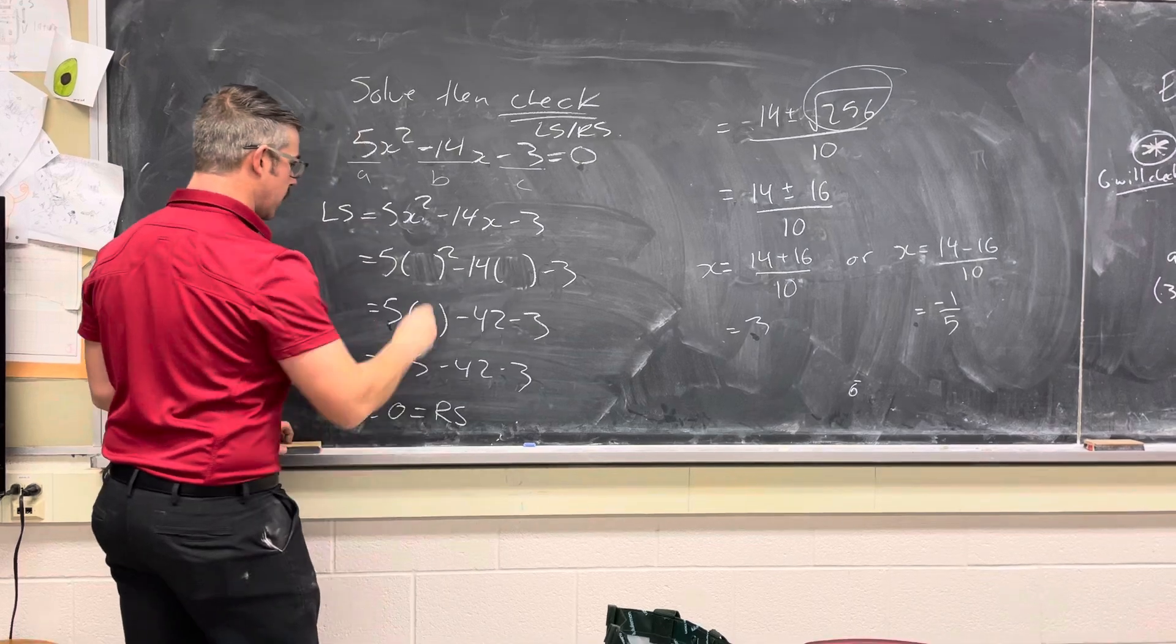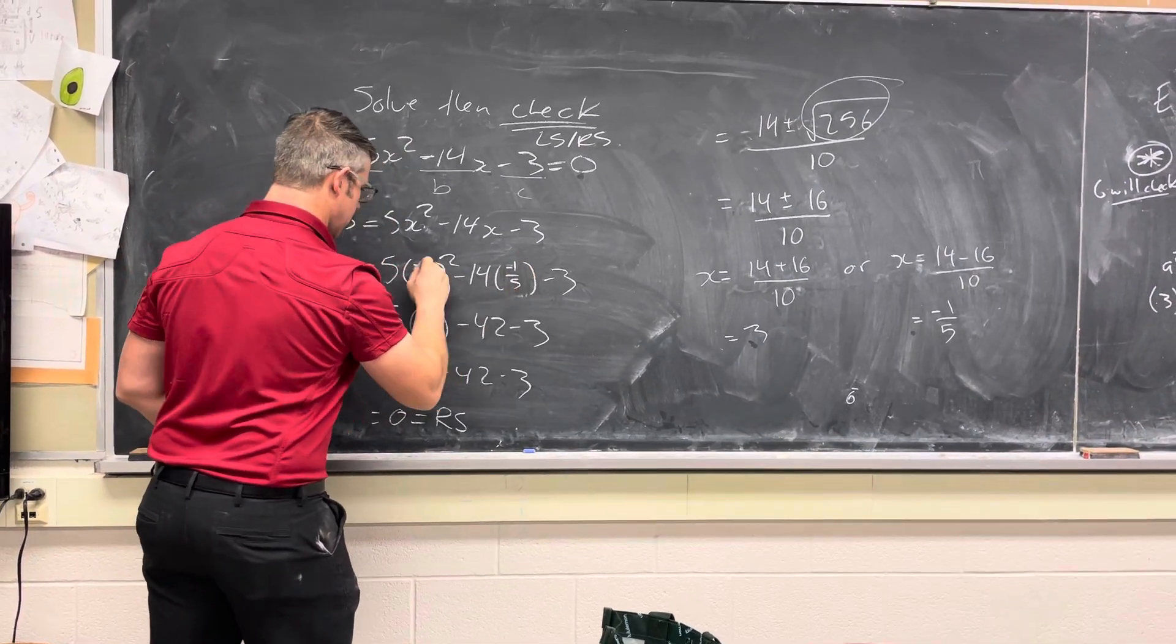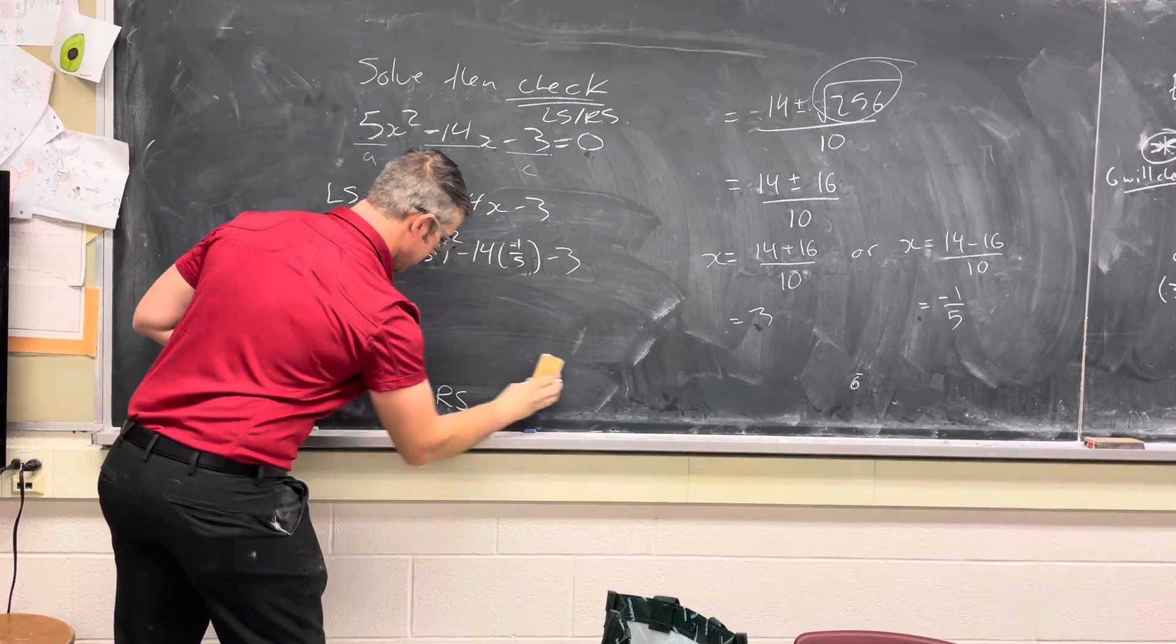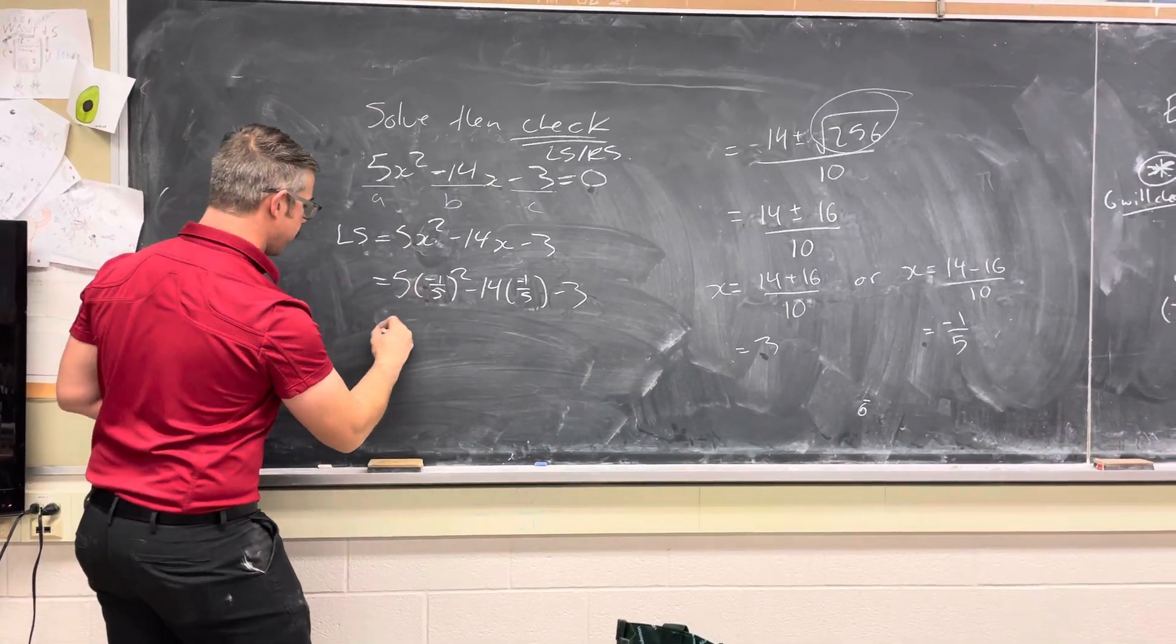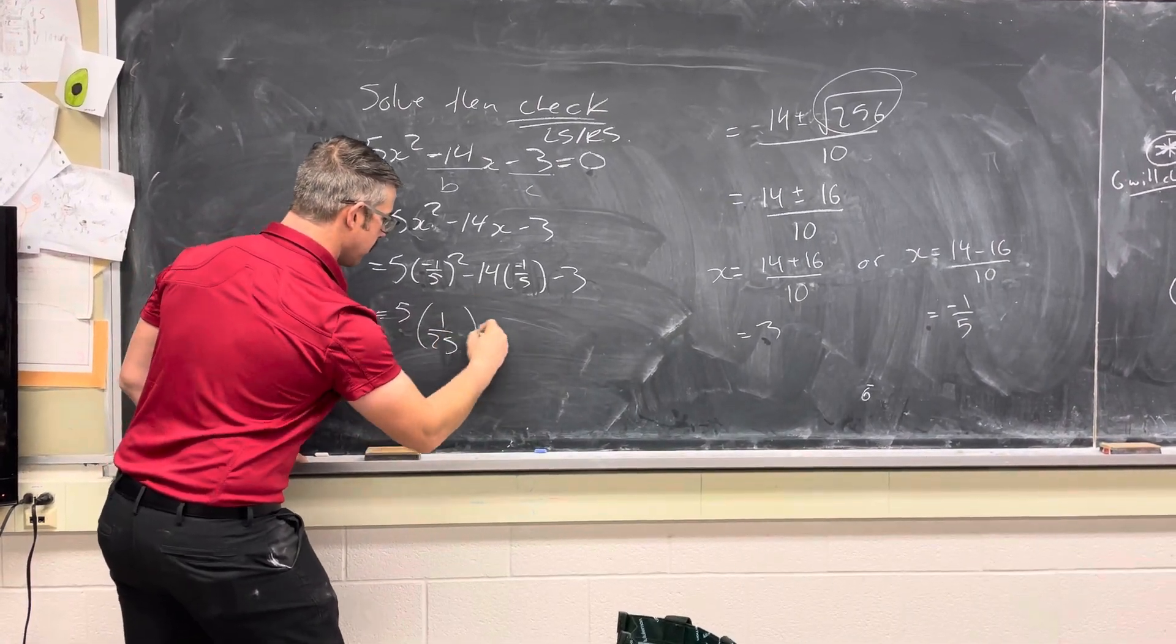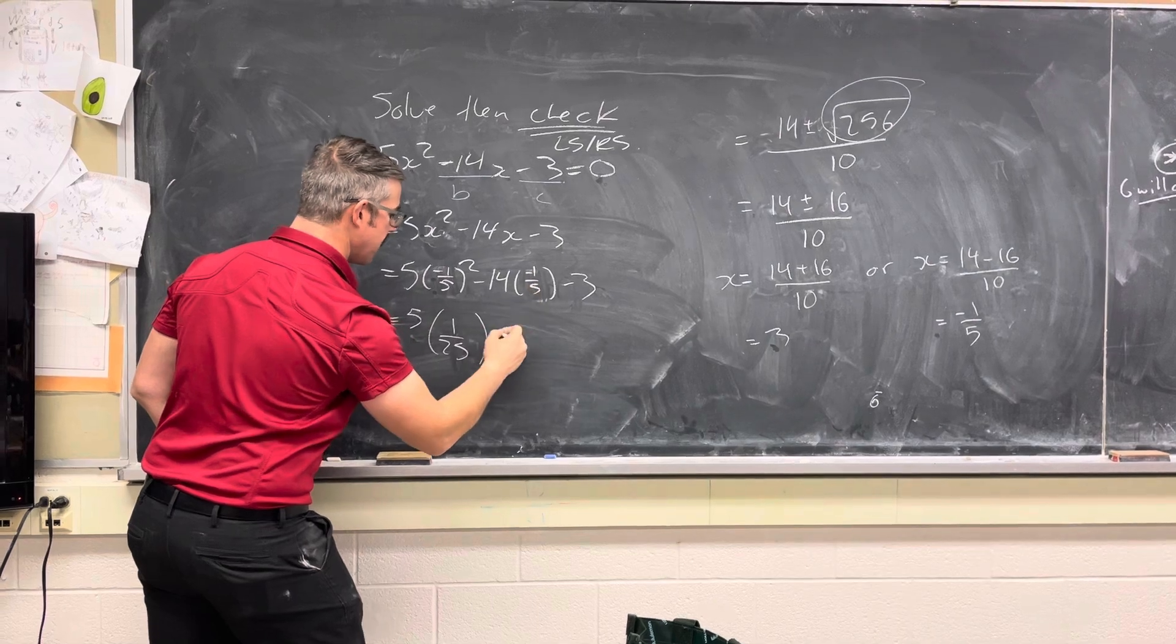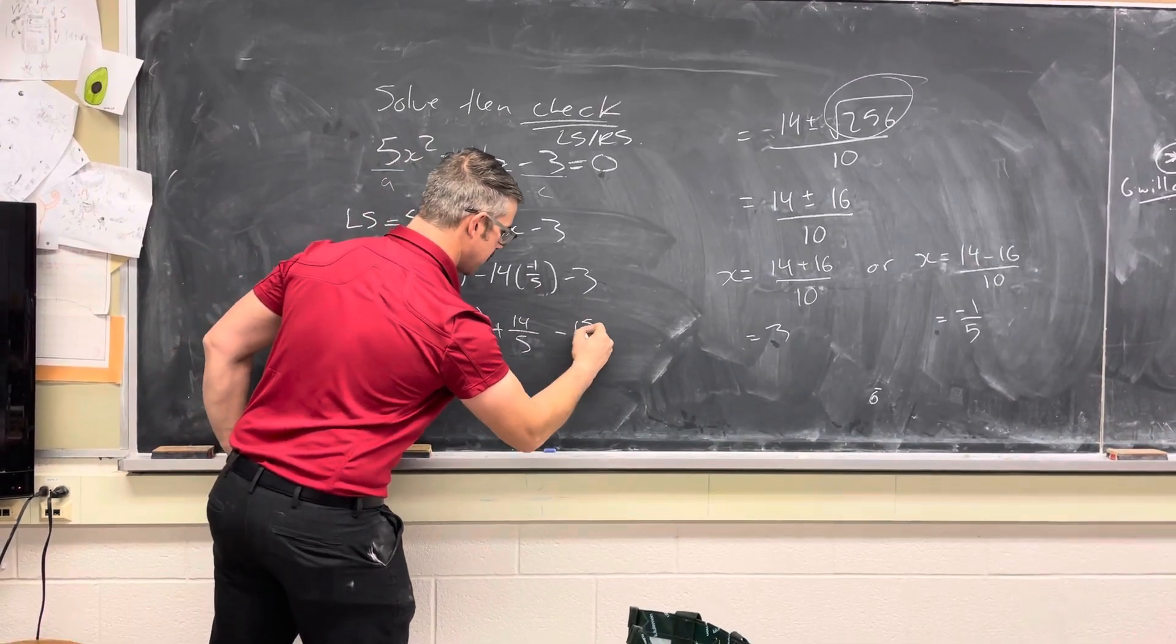Going and checking my solution for negative 1/5. A little bit trickier. I'm just going to replace, instead of x with 3, I'll replace it with negative 1/5. So this would be 5 times 1 over 25. Minus 14 times negative 1/5. That's plus 14 over 5. Minus 3, which is minus 15 over 5.